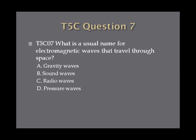Question seven: What is the usual name for electromagnetic waves that travel through space? A. Gravity waves. B. Sound waves. C. Radio waves. Or D. Pressure waves.